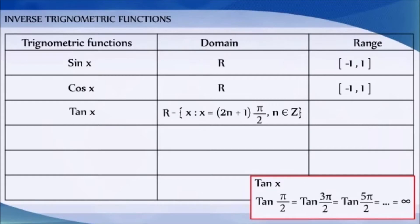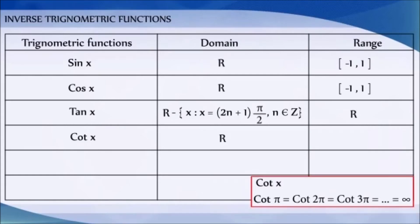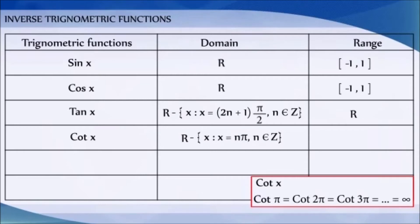The tangent function becomes infinity for all multiples of pi, therefore the domain of the cotangent function is all real numbers except the set of all x such that x equals n·π, where n belongs to integers.